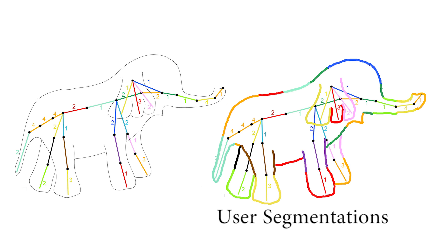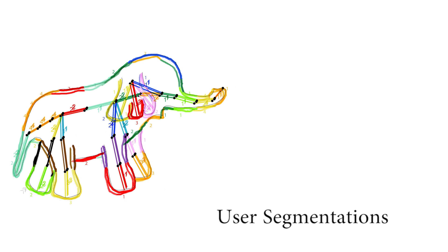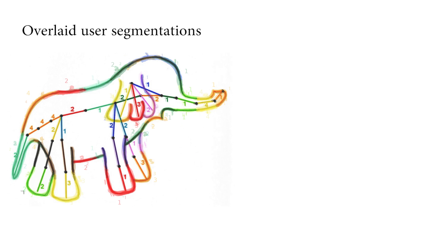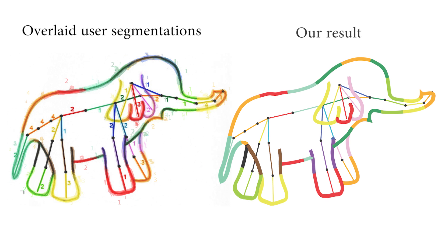To evaluate our segmentations, we asked viewers to hand-segment the contours on various drawings and associate each segment with bones of an overlaid 2D skeleton. Viewer segmentations are largely consistent and closely match our algorithmic segmentation.